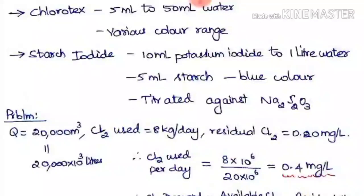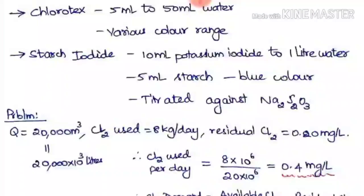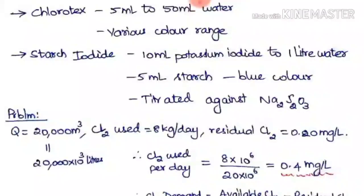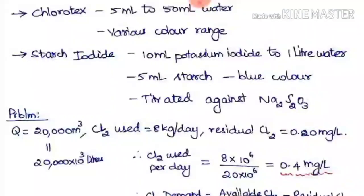Here is an example problem for calculating chlorine demand and chlorine residue. The quantity of water treated is 20,000 m³, the chlorine used per day is 8 kg, and the residual chlorine is 0.2 mg/L. To find the chlorine dosage, divide the chlorine used by the amount of water treated: 8 kg/day divided by 20,000 m³, converted to milligrams and liters.